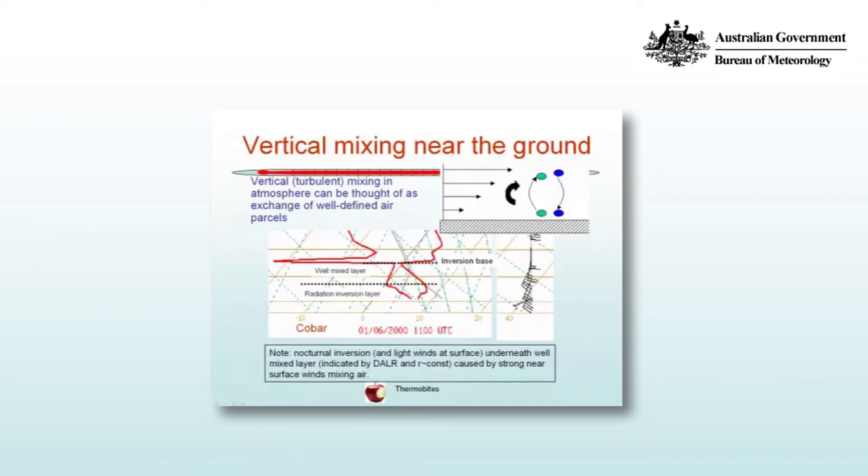If you do that over the entire column, what you will find is that the net resulting temperature and dew point profiles should be represented by a dry adiabat and by a line of constant mixing ratio.